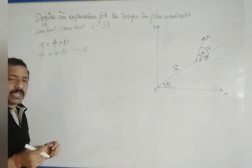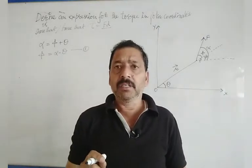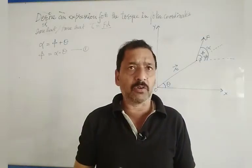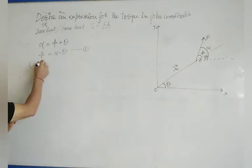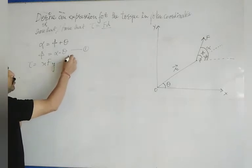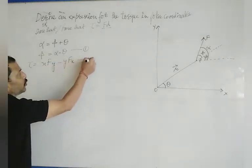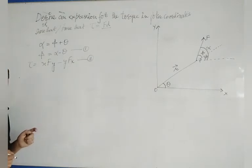Now let's talk about the torque equation. What is equation number 2? Tau is equal to x into Fy minus y into Fx. This is equation number 2.